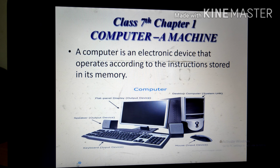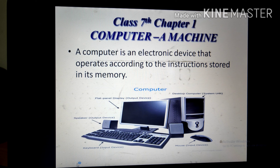Hello students, today we are going to start Class 7 Computer Science. The very first chapter is 'Computer: A Machine.' In this chapter we will discuss the fundamentals of computers. In your previous classes you have already learned about what a computer is. A computer is an electronic device that operates according to instructions stored in its memory. In simple terms, a computer is a machine which makes your work easier.